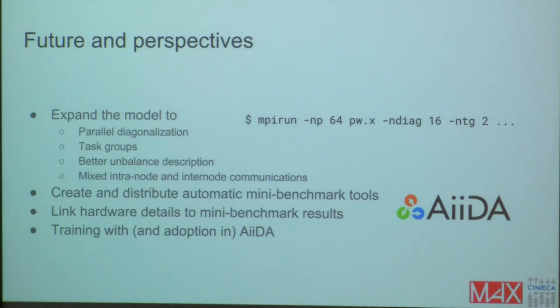Let me finish with future and perspectives because we have many ideas on how to deploy this system in different use cases. So of course we would like to expand this model to parallel organization, task groups, better unbalanced description. And these are parts of model improvements. But after that, of course we are in contact with Intel to adjust and provide information starting working on the micro benchmarks to obtain a description of the time to solution in future architecture. And another idea that we hope will take place is the training of the model starting with AiiDA level. So with high throughput calculations and possibly the adoption of the model in AiiDA for providing this mechanism of autotuning of the parallel performances and an estimate for a given workflow for the time to solution of a given workflow.